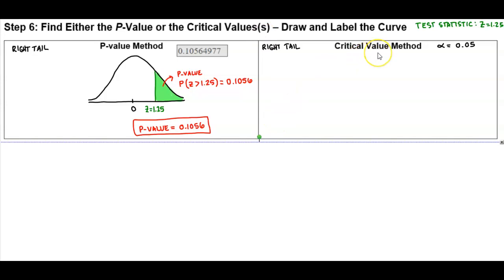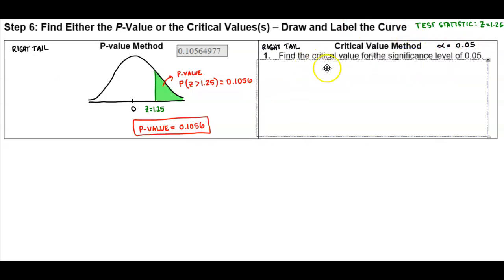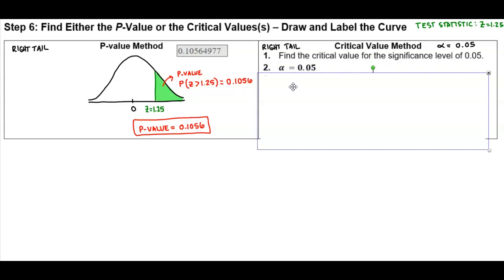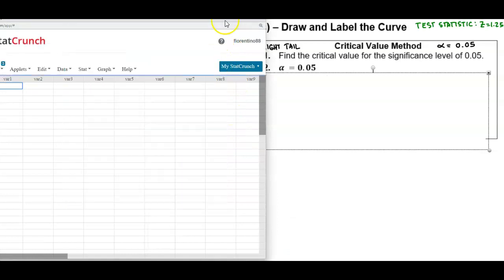When we're doing the critical value method, we need to find the critical value that's associated with alpha equal to 0.05. So the first thing I do is find the critical value for the significance level of 0.05. Now this is a one tail which is a right tail. Since it's right tail, then the area that's going to be in the right tail is 0.05. So what is the critical value for that? Now what we're going to do is use StatCrunch to find that.